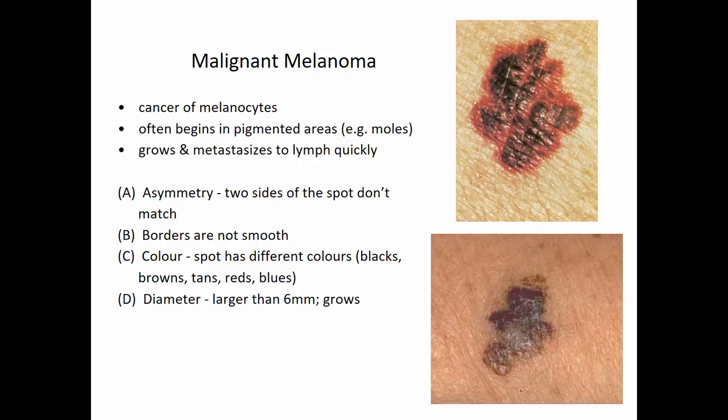It's a good idea to do periodic mole checks. You can use the ABCD rule: A stands for asymmetry — if the two sides of the mole don't match. B is for borders — if they're not smooth or are jagged. C is for color — if it has multiple colors, particularly reds or blues within the mole. D is for diameter — if it's larger than six millimeters, particularly if it's growing. Any mole that is changing shape should be checked out.